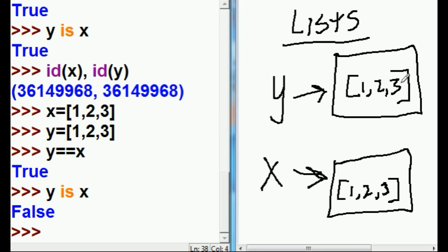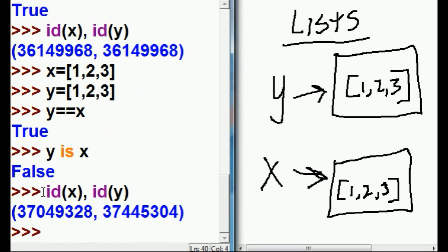y is referencing this [1,2,3], and x is referencing this [1,2,3]. Totally different separate areas in memory. Can we put this to the test? Yes, we can. How? Oh, by keying id of x and id of y. And we get what? Two separate areas of memory.